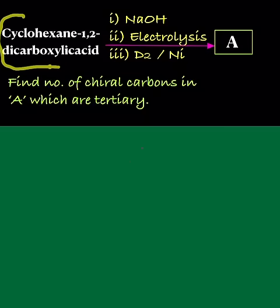Let us discuss this question. In this cyclohexane 1,2-dicarboxylic acid, first with NaOH, then electrolysis, finally deuterium and nickel.